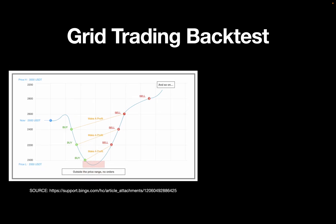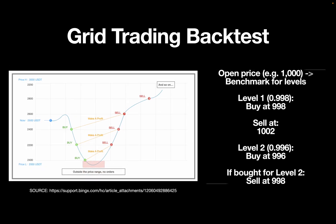Let's take a look at how I am designing it. Our benchmark is always the open price. Let's take an easy example: your open price for the day is 1000, and on this you apply your levels. So you would buy at 998 and sell at 1002. However, if the price drops, you are buying again at 996 and selling that one at 998. So essentially we are looking at very granular intraday movements and checking if those levels are being hit within a day.